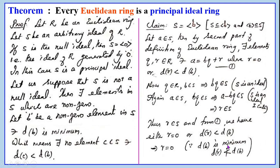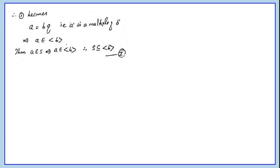Therefore D(R) is not less than D(B), and hence the only possibility is R equals 0. Therefore, equation 1 becomes A equals BQ plus R, but R equals 0, so A equals BQ. That is, A is a multiple of B, which means A belongs to ⟨b⟩. Thus A belongs to S implies A belongs to ⟨b⟩, that is S is a subset of ⟨b⟩.